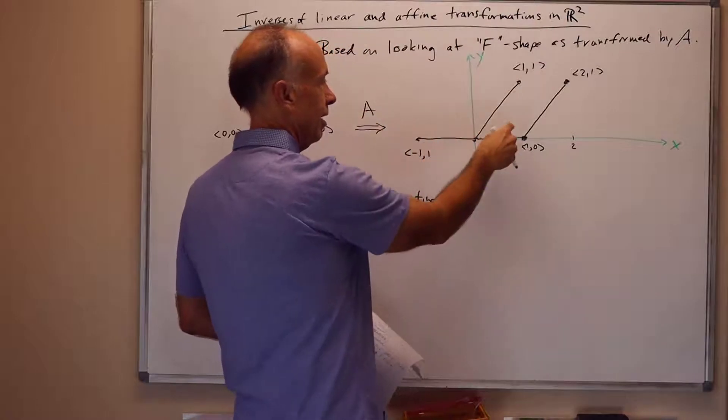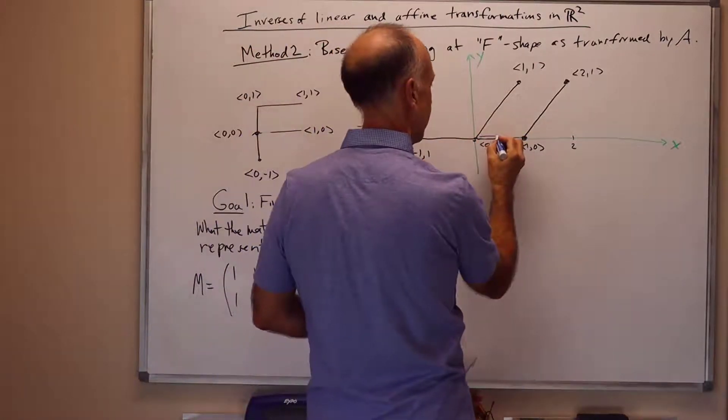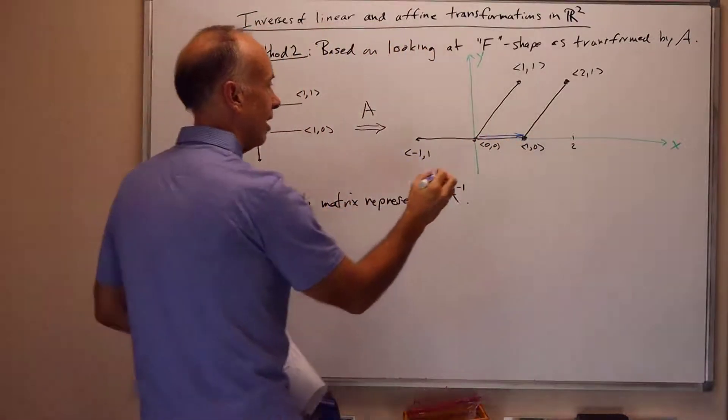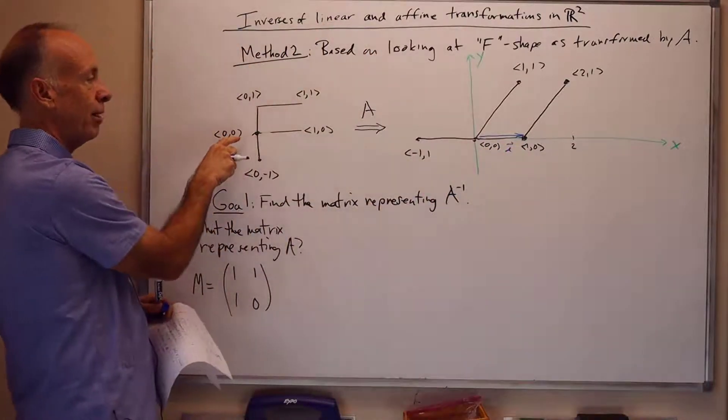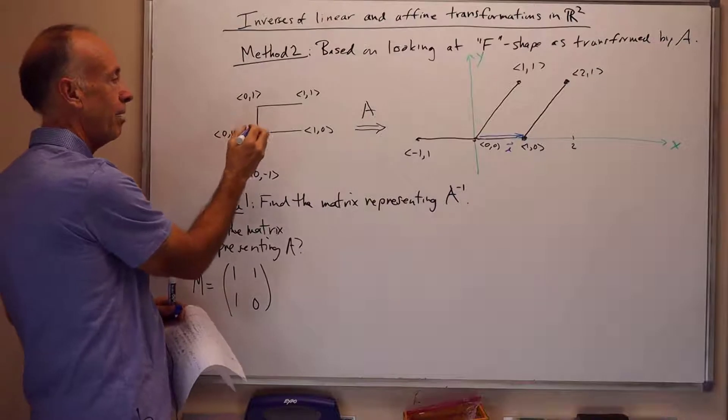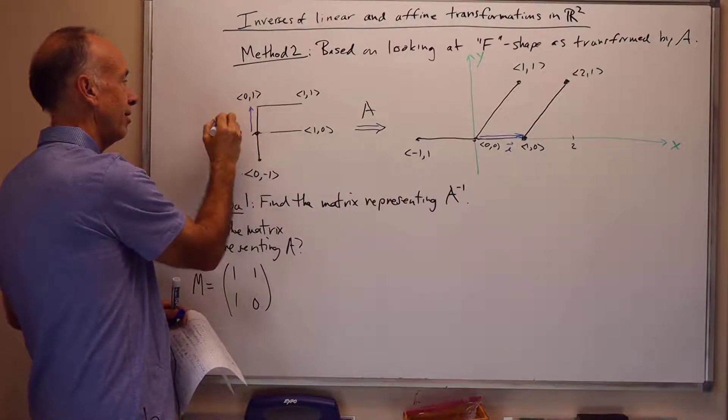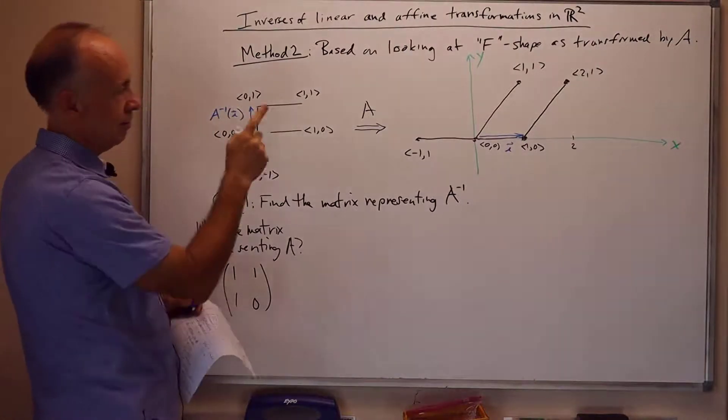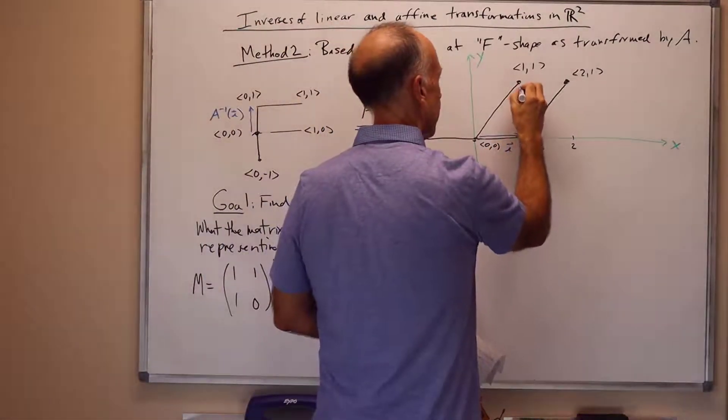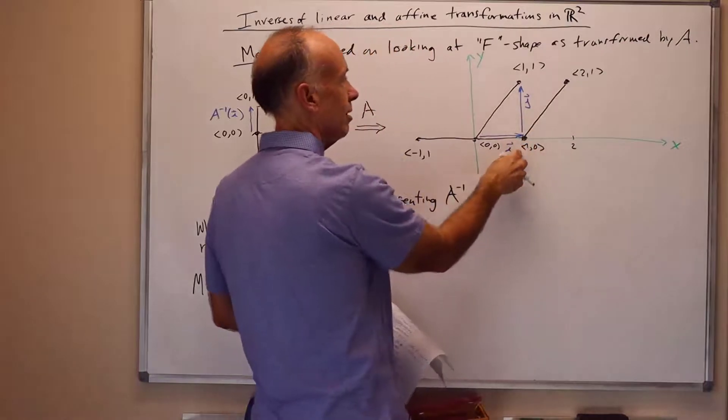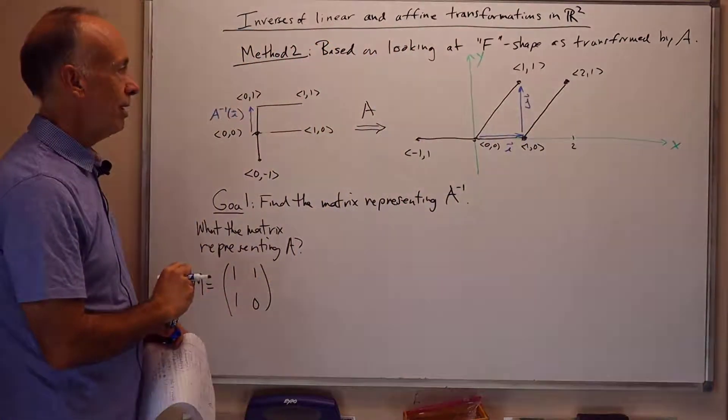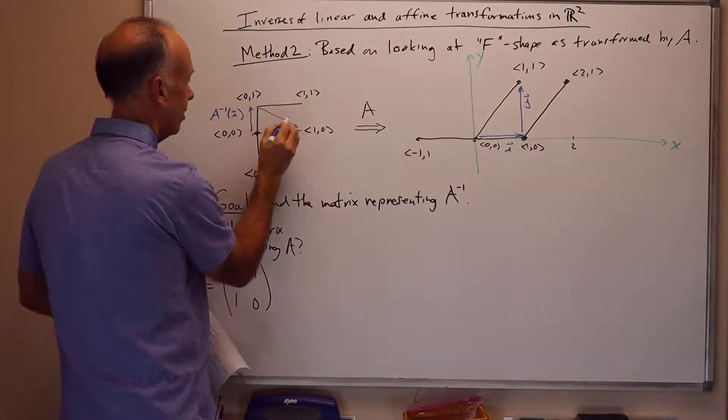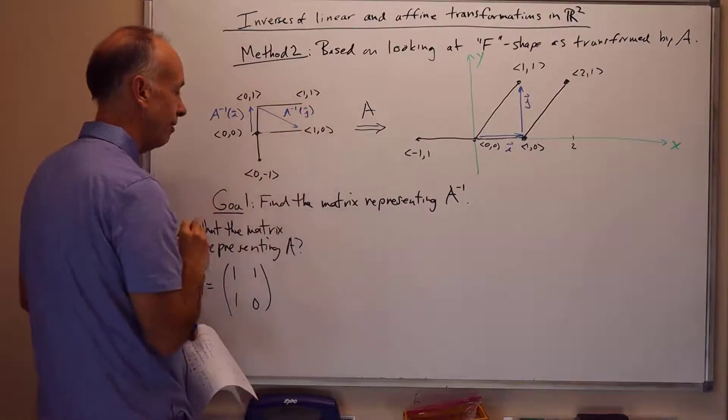To get a copy of the i vector over here, I'll use right there, the vector rooted at 0 and ending at 1,0. And that's i. Its pre-image over here, where it got mapped from by A, is here. So, here's A inverse of i. And let's find a copy of j over here. Here's a copy of j. It goes from 1,0 up to 1,1. And so, the pre-image of that, well, it's going from the top corner of f to the end of the arm of the f. So, this is A inverse of j.